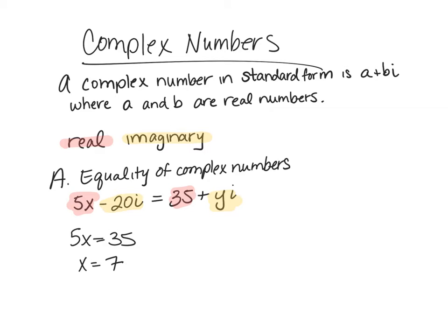Well negative 20i equals yi. I can divide by i so I can just ignore the i part here. And negative 20 equals y. So we've just found what x and y are.